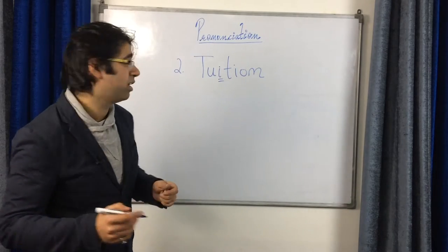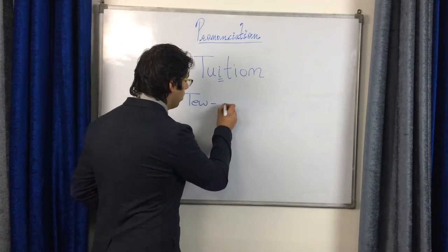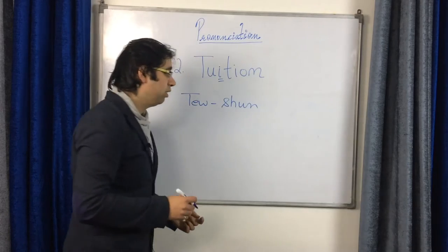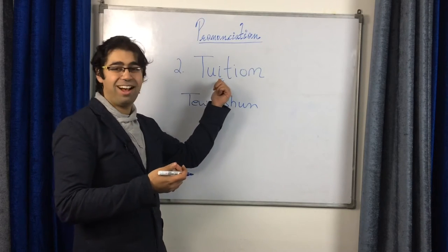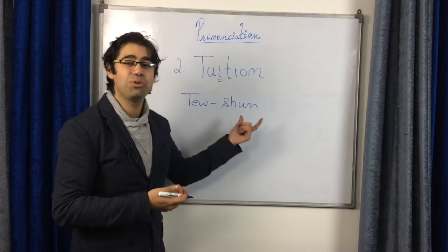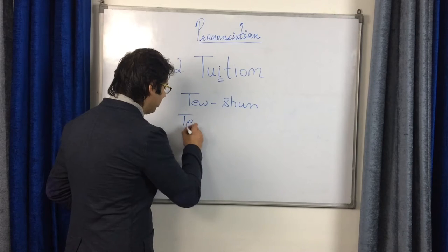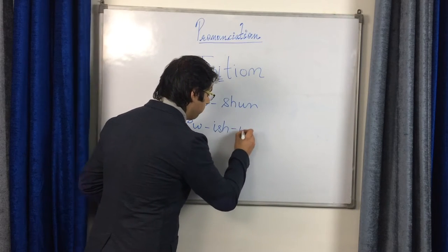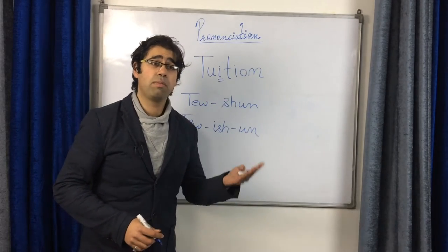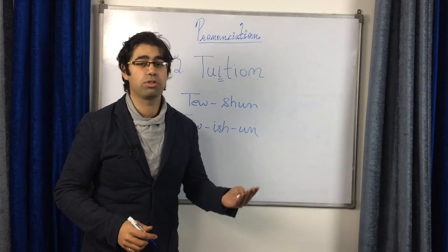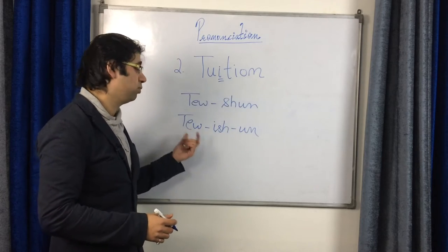Let's understand that with the help of a pronunciation aid. The wrong version is 'tuition.' Interestingly, 'shun' means avoid — and that's exactly what you've done: avoided the I sound, giving you 'tuition.' Let's not do that. Give I the right it deserves and you get the correct version: tuition. I'm going to attend my maths tuition, not tuition. Let's change tuition permanently to tuition today.